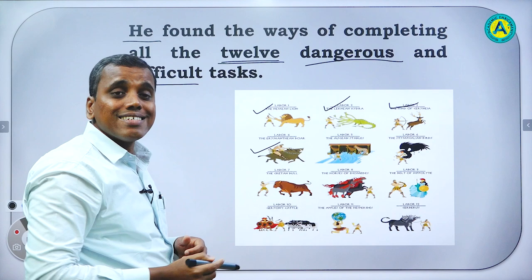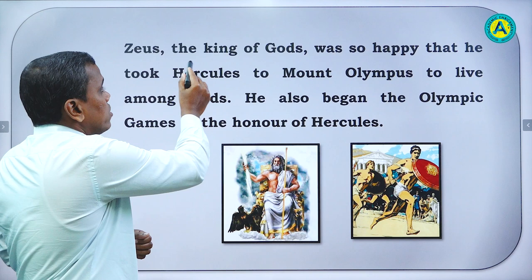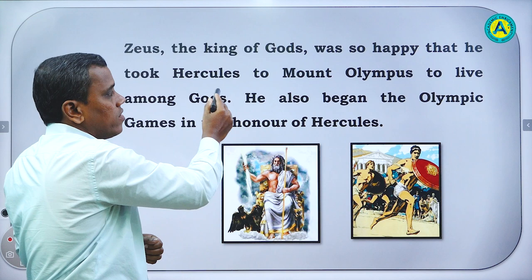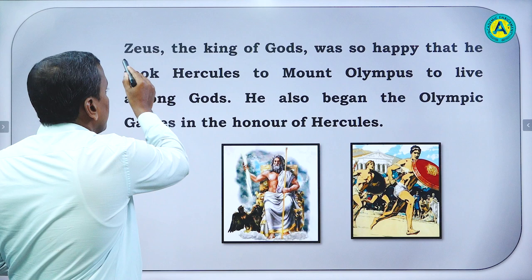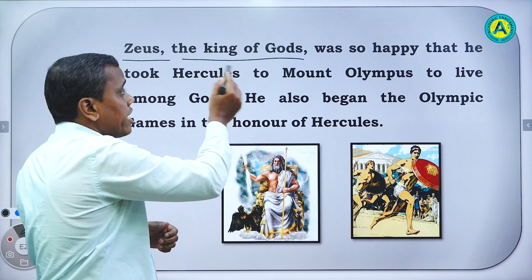These 12 dangerous tasks were given to Hercules, but he found ways to complete all of them. Now, Zeus — the king of gods — was so happy that he took Hercules to Mount Olympus to live among gods. Zeus — who is Zeus? He is the king of gods. The king of gods according to Greek civilization, in Greek mythology.